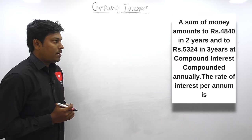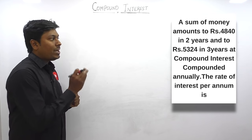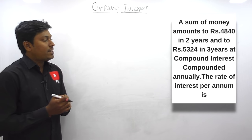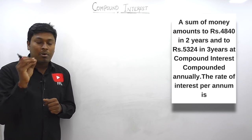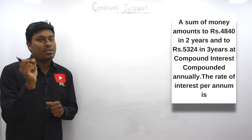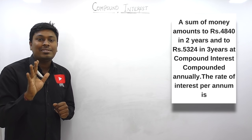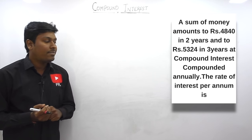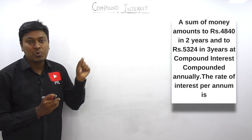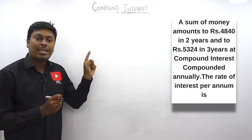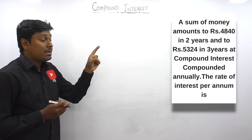Question number one: a sum of money amounts to rupees 4840 in two years and rupees 5324 in three years at compound interest compounded annually. Our target is to find the rate of interest per annum. Two data points are given. First, we frame an equation using 4840 in two years, then a second equation using 5324 in three years, and then we divide equation two by equation one.